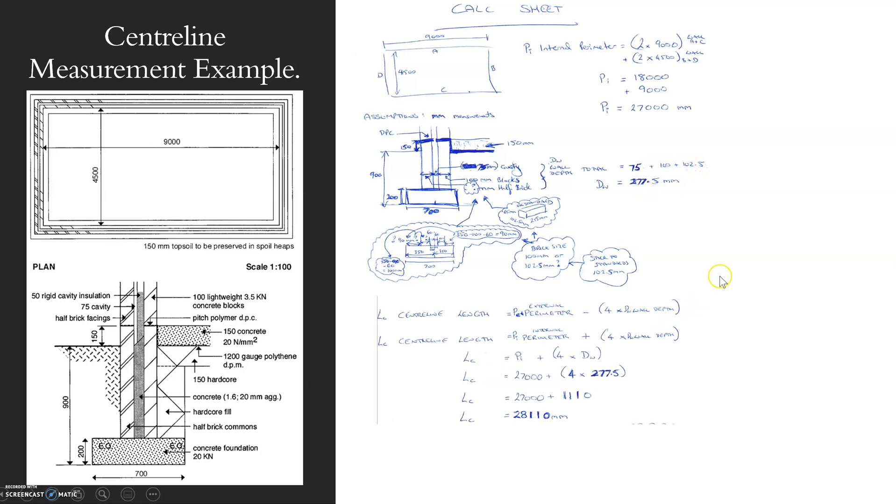So all I need to do now is to input this into my centreline length calculation. You use the formula. If you've got the internal perimeter, which is what I've got, you use this one. If you've got the external perimeter, you use that one. Just bear that in mind.